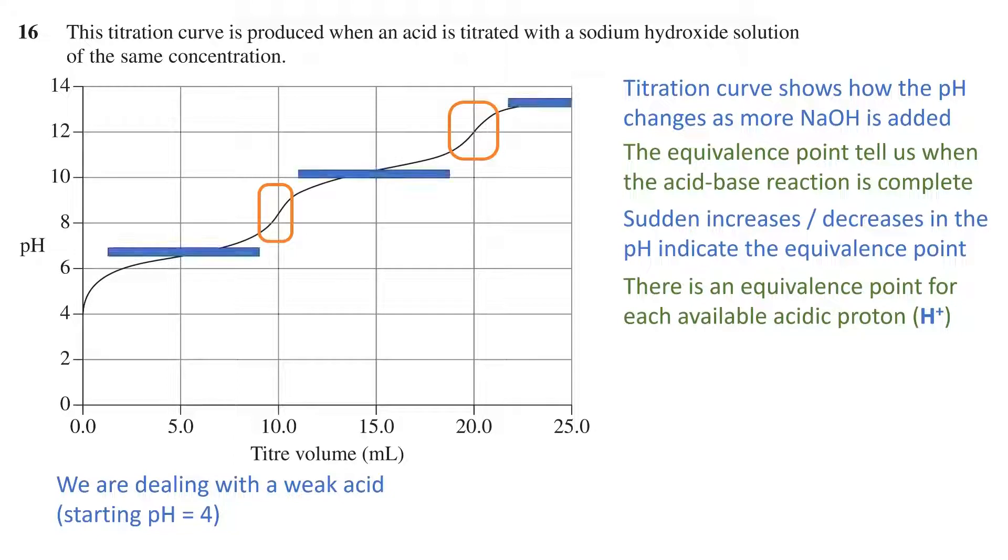Otherwise, the regions in between are somewhat flat. These two increases in pH indicate that we have two reactions occurring. That is, two protons were lost in the process, and therefore we have a diprotic acid.